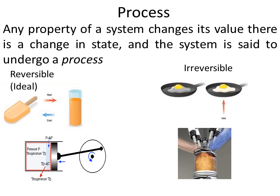When any property of a system changes its value, there is a change in state and the system is said to undergo a process. A process is classified into two: reversible (ideal) process and irreversible process. A process is reversible when it can proceed from state 1 to state 2 and be taken back from state 2 to state 1 without any change in the surroundings. An irreversible process cannot be taken back from state 2 to state 1 along the same path.